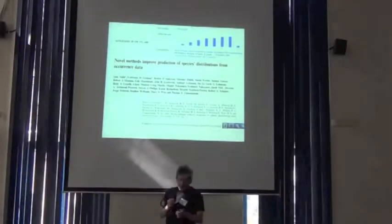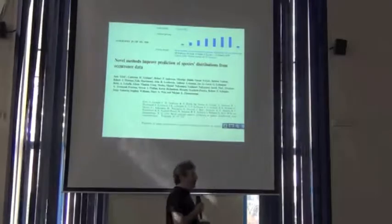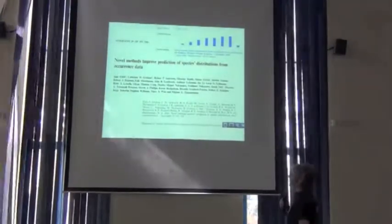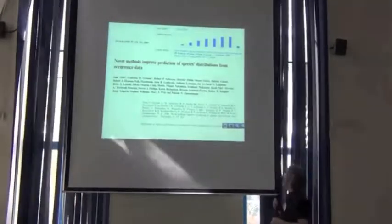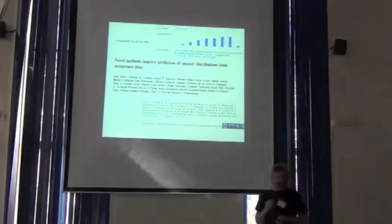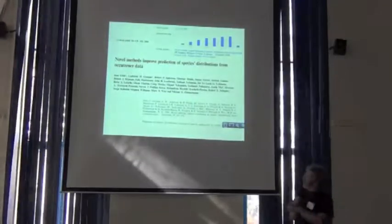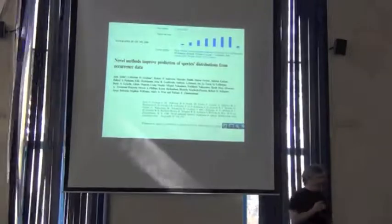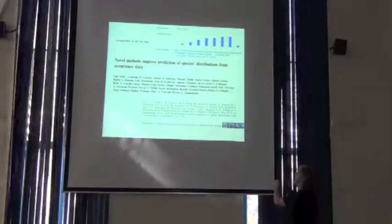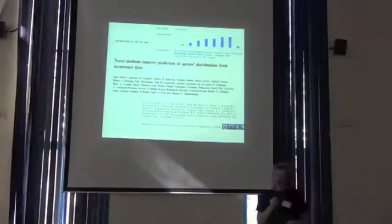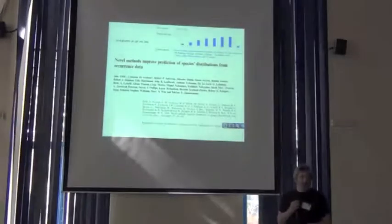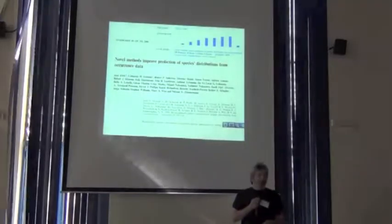Now I'm going to bring that right back to niche modeling. Richard's already given you a presentation of this paper. I'm going to go into more detail. Novel Methods Improve Predictions of Species Distributions from Occurrence Data. You can see a long list of authors, myself included, who have been publishing and building this field for the last decade. So you would think this would be authoritative. What's more, this paper has been cited more than 2,000 times.